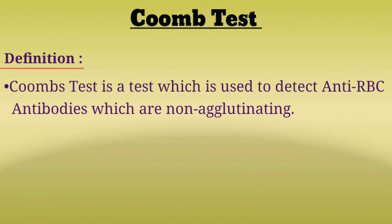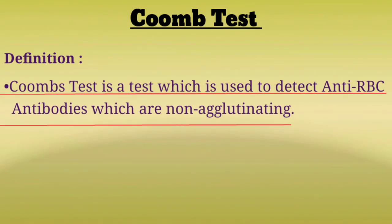The definition of the Coombs Test: it is a test used to detect anti-RBC antibodies which are non-agglutinating — that is, IgG class antibodies. Coombs reagent facilitates agglutination of these IgG-coated red cells. That is why in the Coombs Test we detect IgG class antibodies specifically.